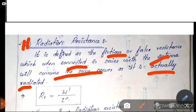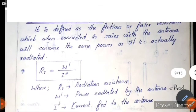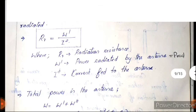We denote radiation resistance with the suffix R, written as Rr. It is equal to W-dash divided by I-squared, where W-dash is the power radiated by the antenna, Rr is the radiation resistance, and I is the current fed to the antenna.